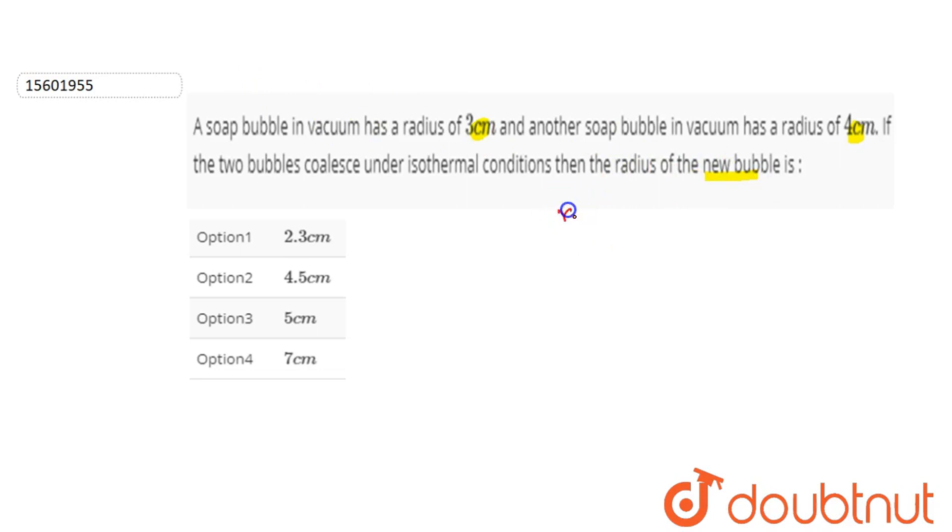Let's do this. So, what is the value of R1? 3 cm. And R2, the second bubble coalesce is 4 cm. Okay? And the final bubble is R. And T is the surface tension. Okay?